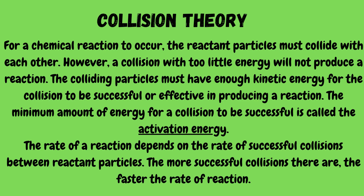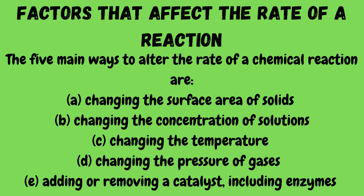What do we mean by the rate of a reaction? For that, we first look at collision theory. For a chemical reaction to occur, the reactant particles must collide with each other. However, a collision with too little energy will not produce a reaction. The colliding particles must have enough kinetic energy for the collision to be successful or effective. The minimum amount of energy for a collision to be successful is called the activation energy. The rate of a reaction depends on the rate of successful collisions between reactant particles — the more successful collisions there are, the faster the rate of reaction.